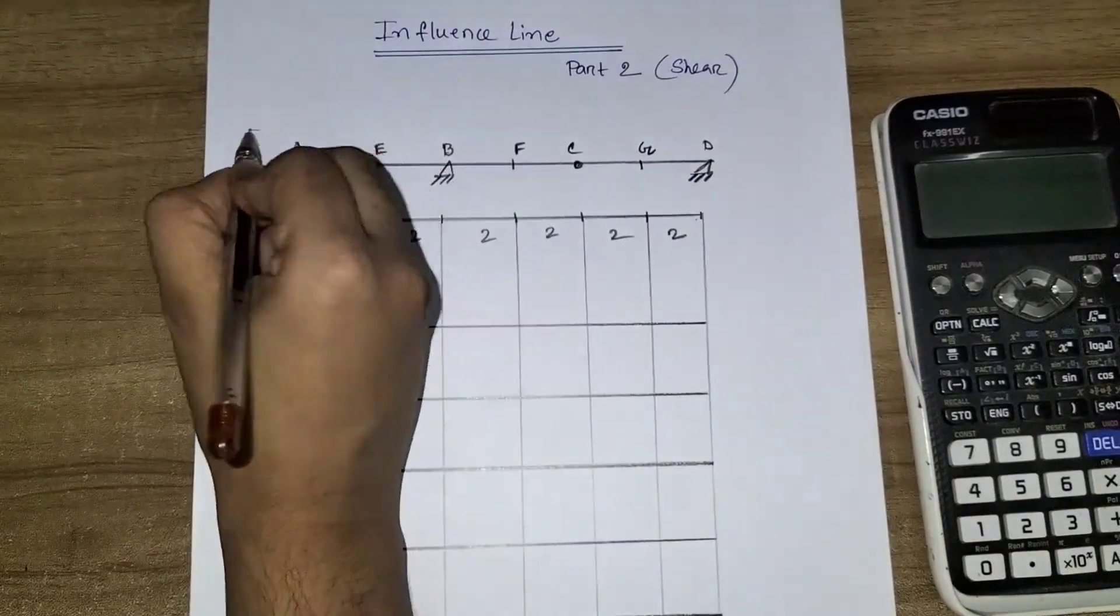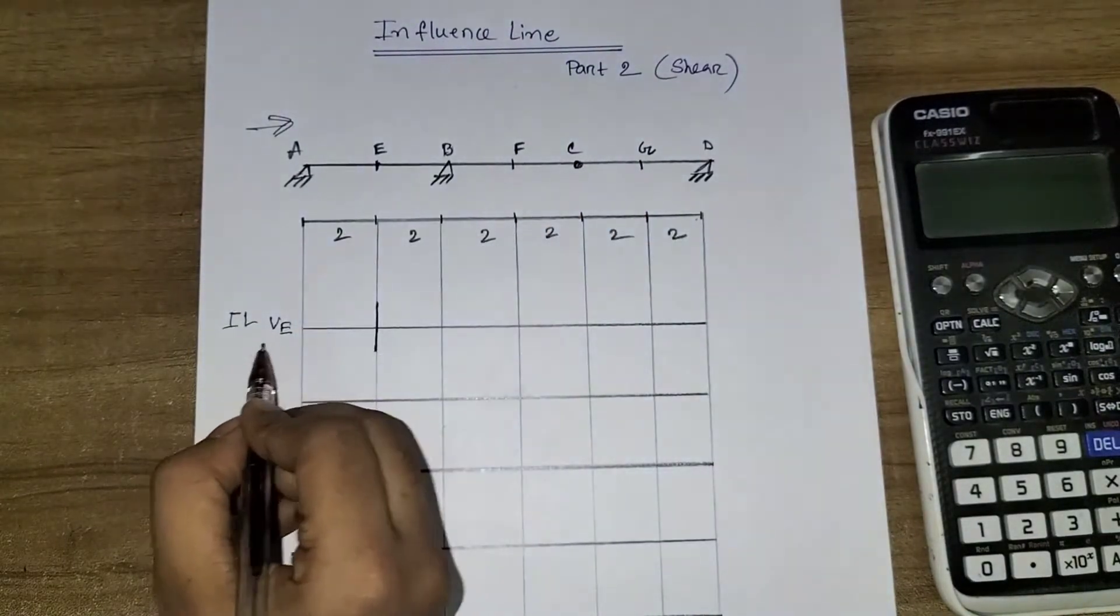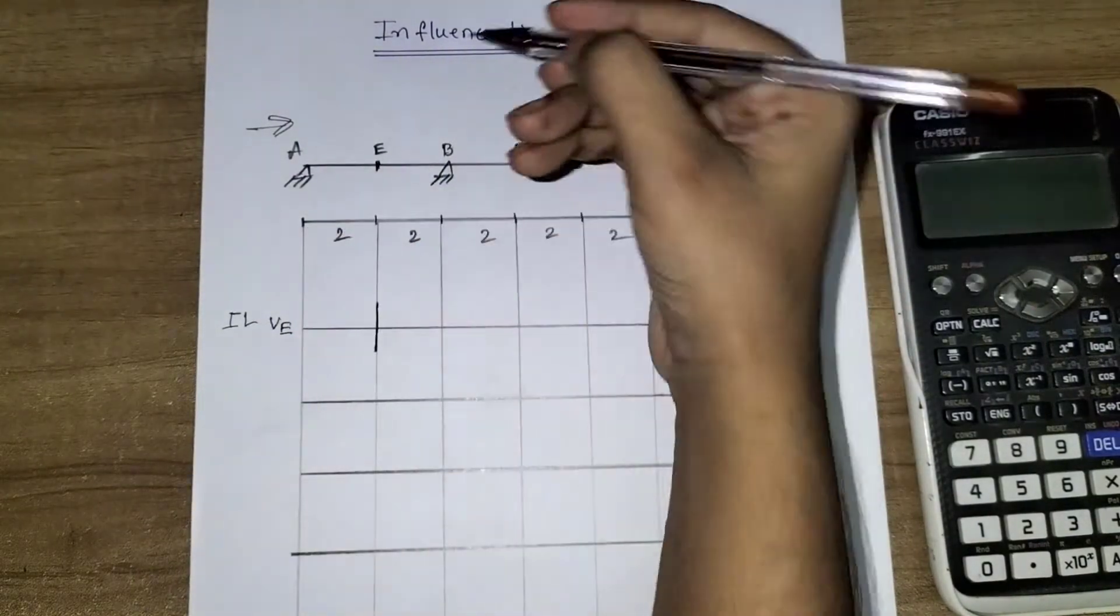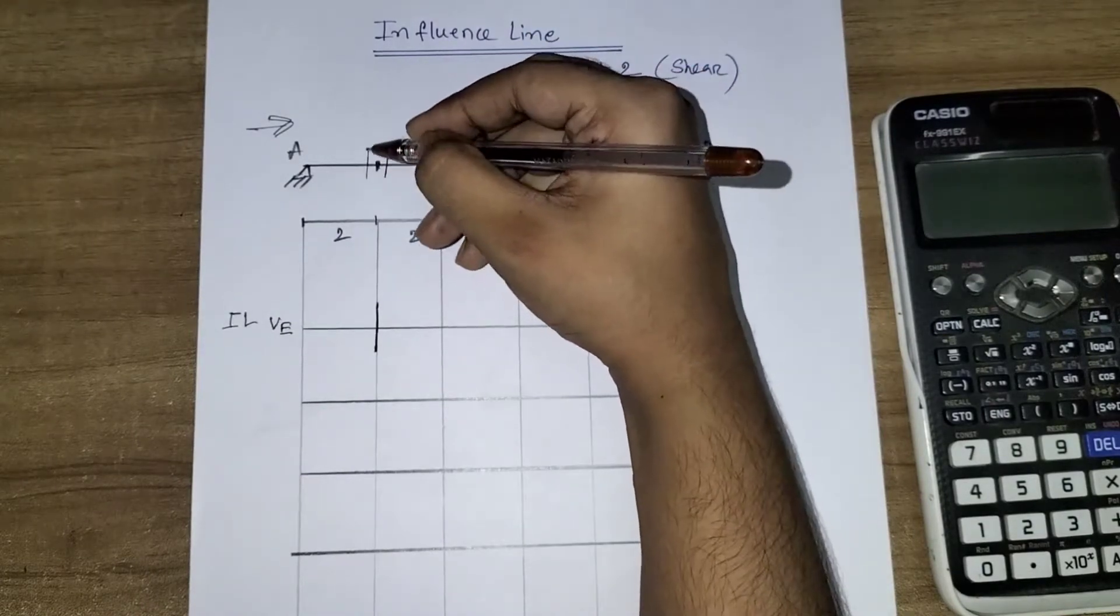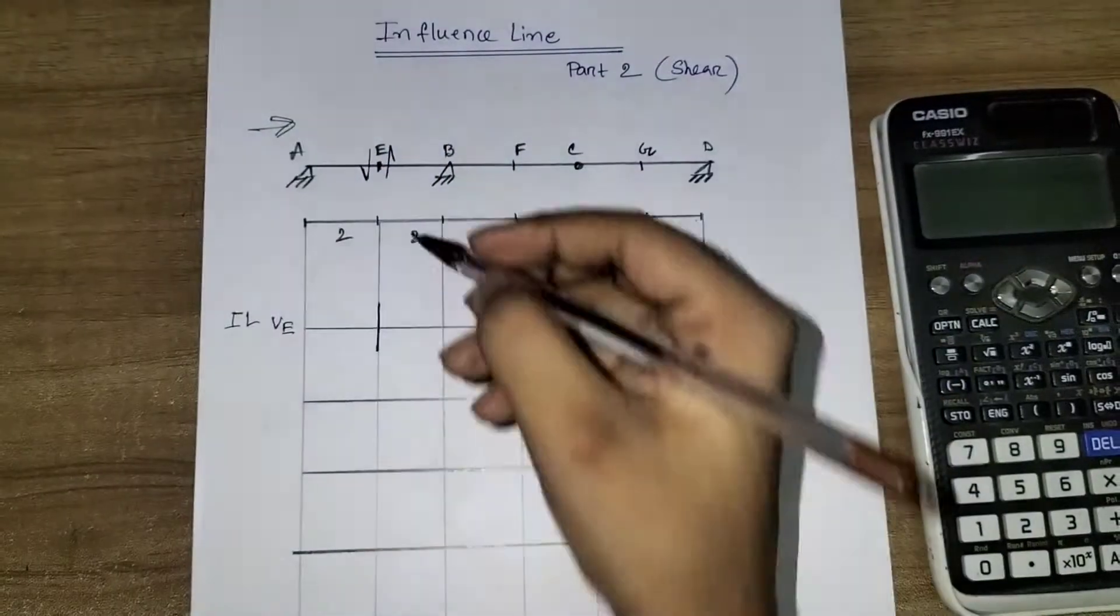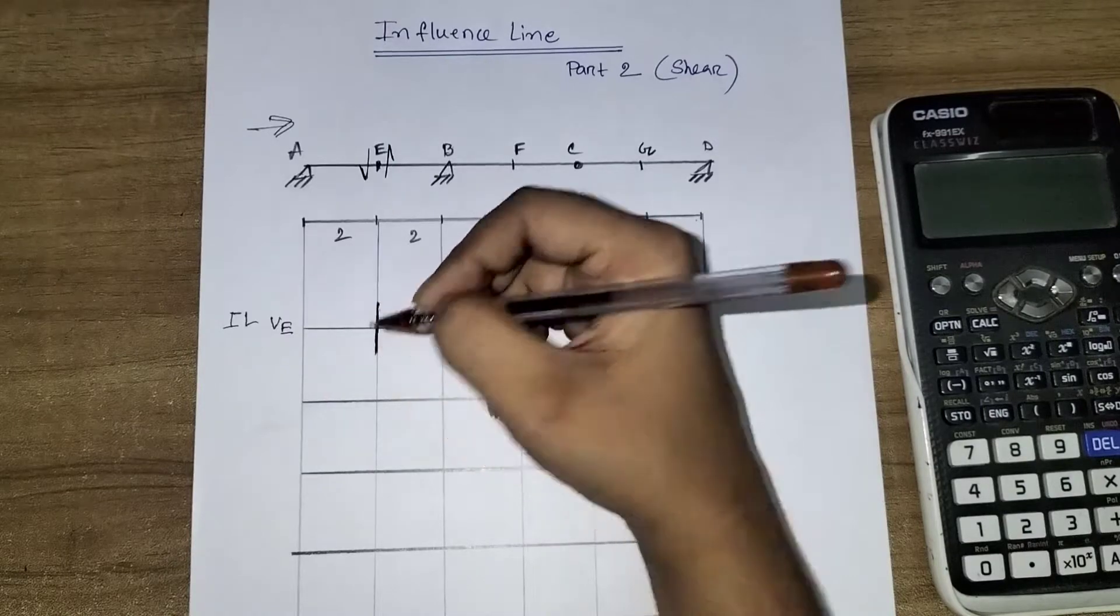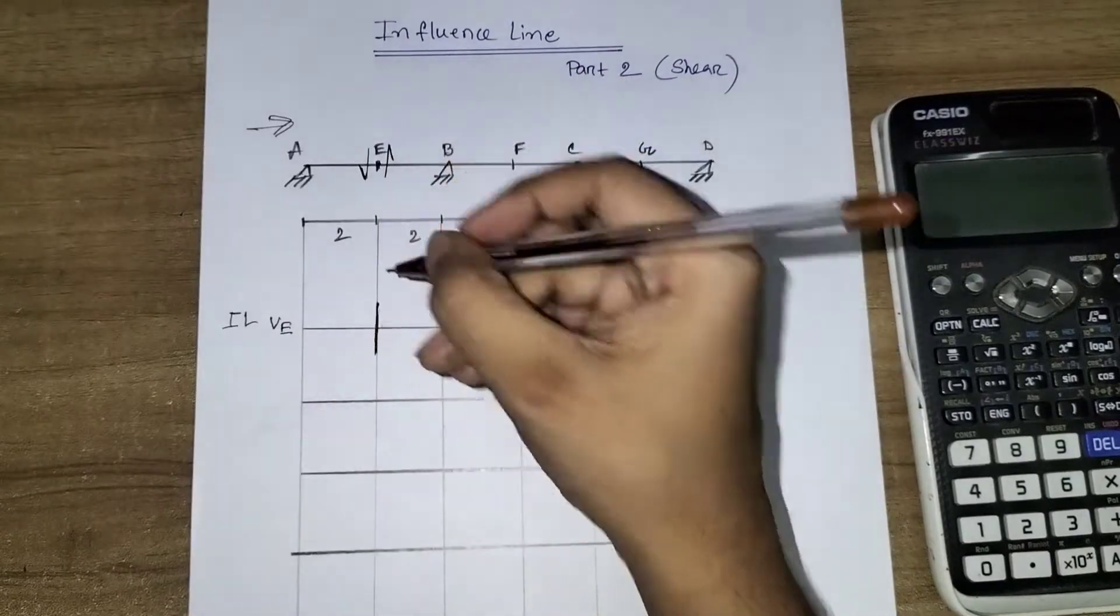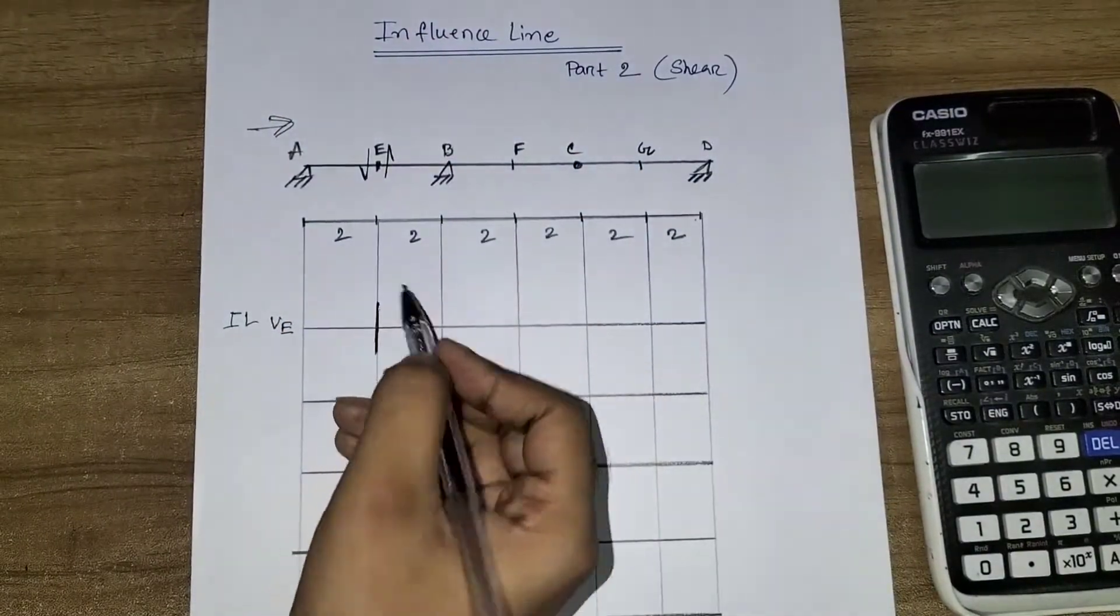Here is the direction of load from A to D. So here is the influence line for VE at point E. I'm going to show you the upward side and the downward side - one unit movement upward and downward, total one unit movement.